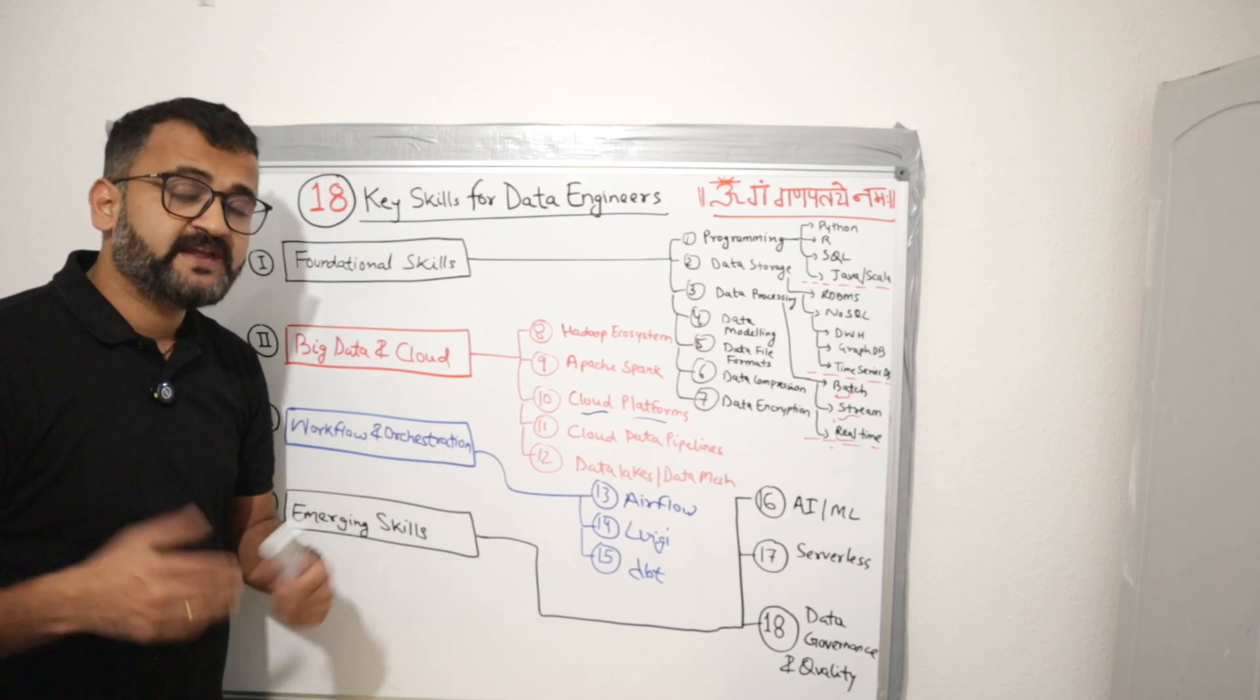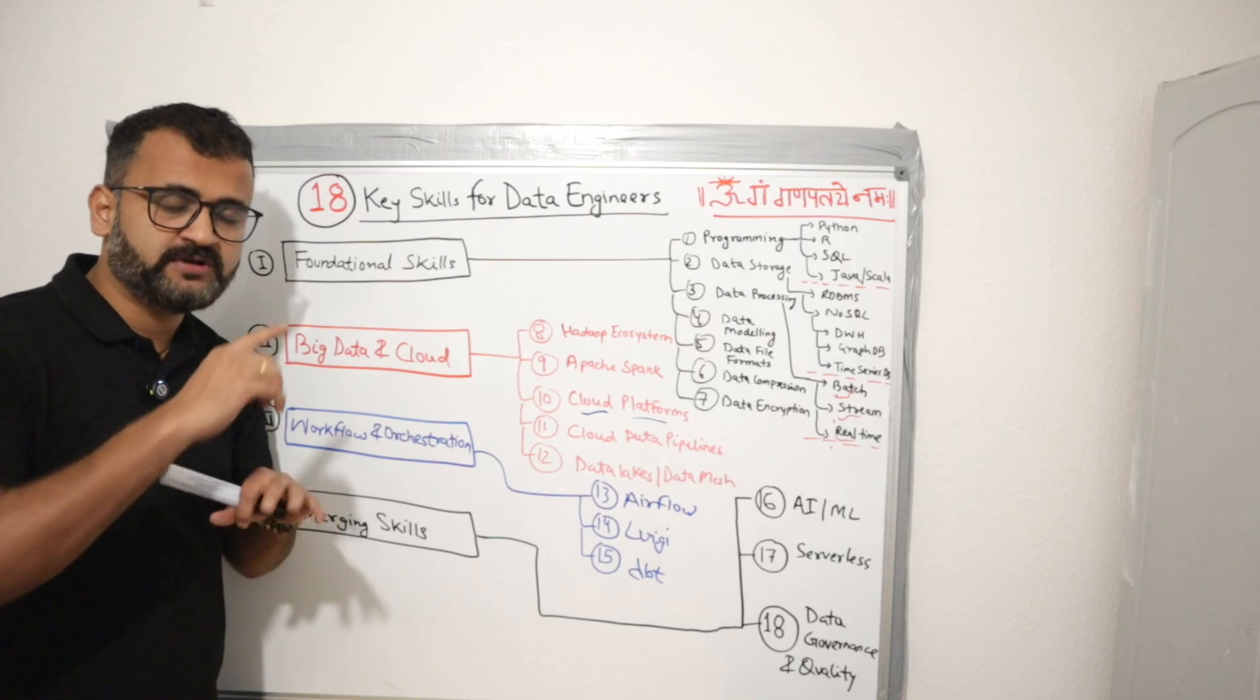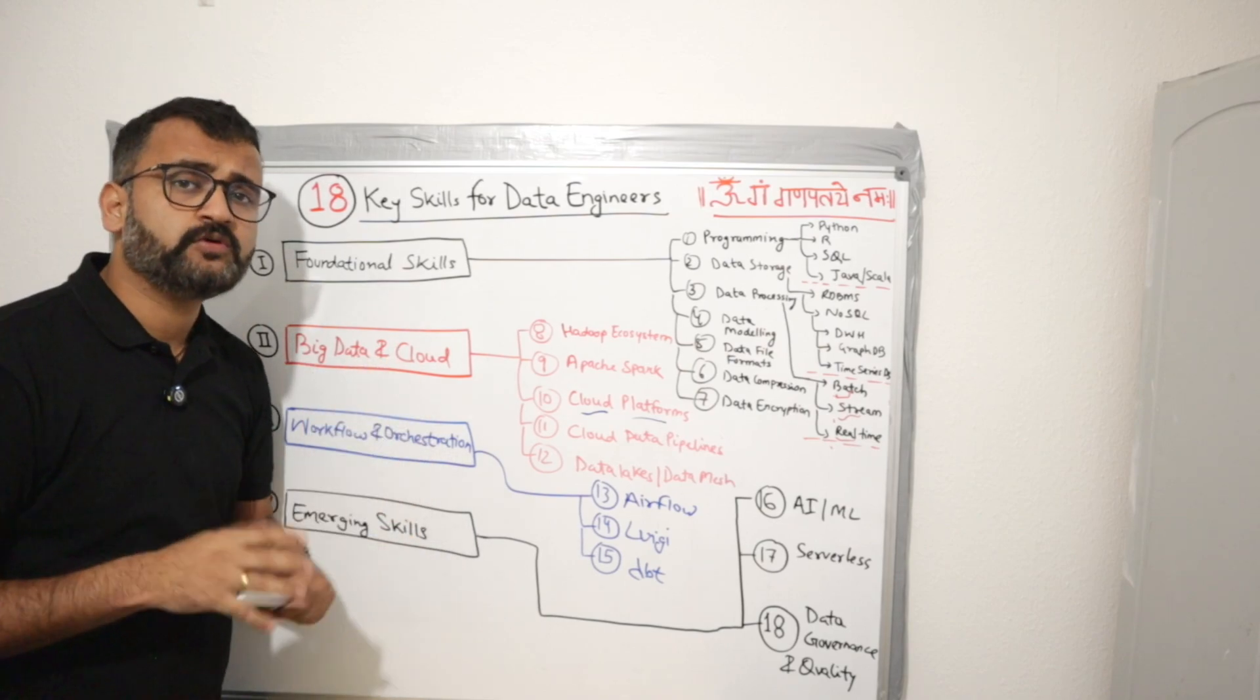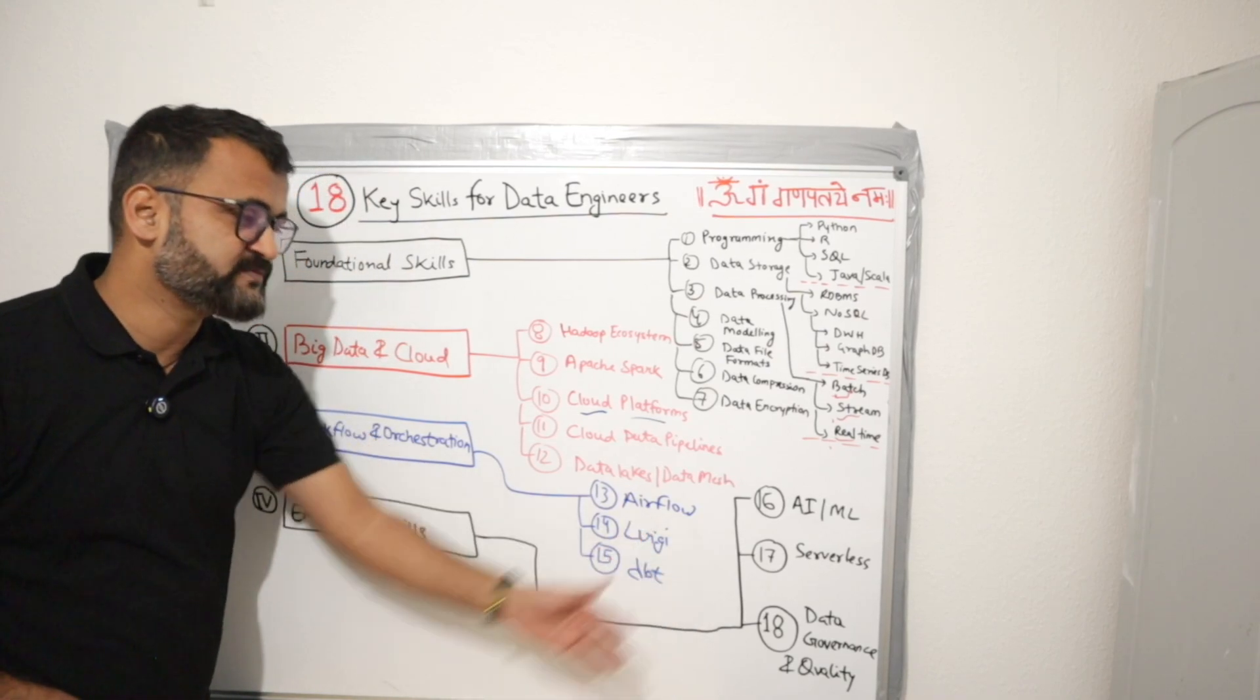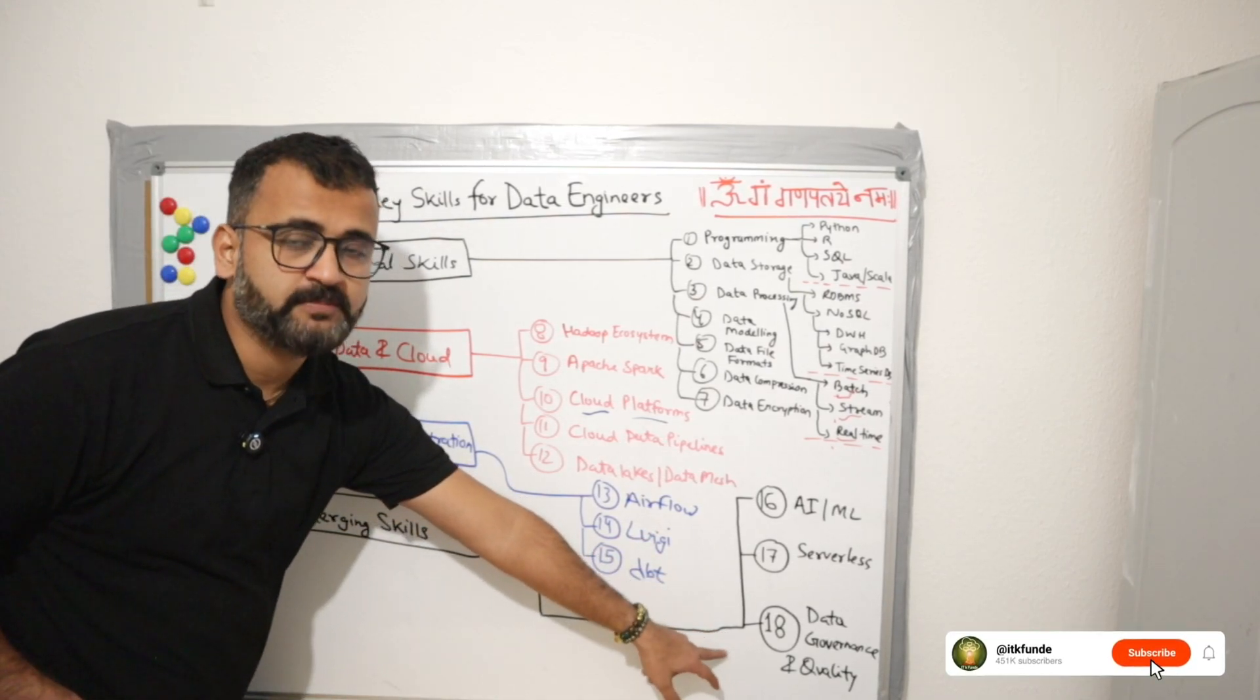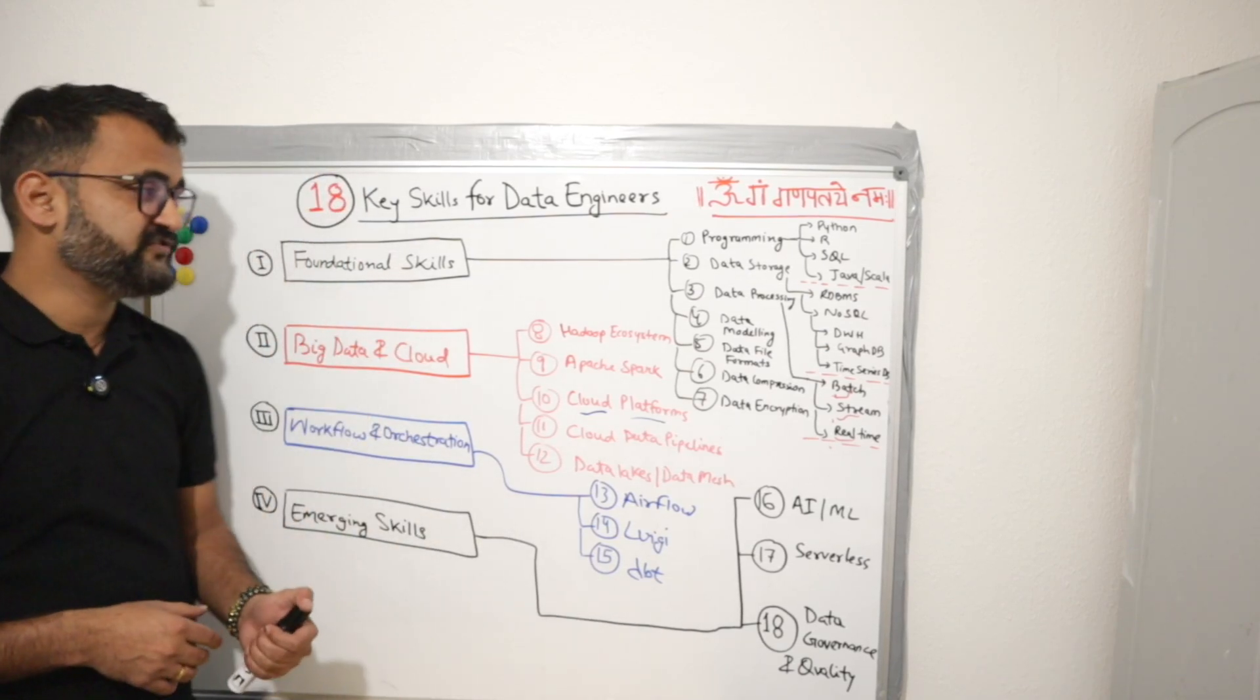Data governance and quality is again a very upcoming area because data security, governance, control, and quality is very important to understand your data lineage, your data integrity, how you are maintaining your data quality on cloud. So I don't remember any specific tools, but there are companies which provide data governance and quality. But yeah, this is also very upcoming and very important area when it comes to the future of data engineering.